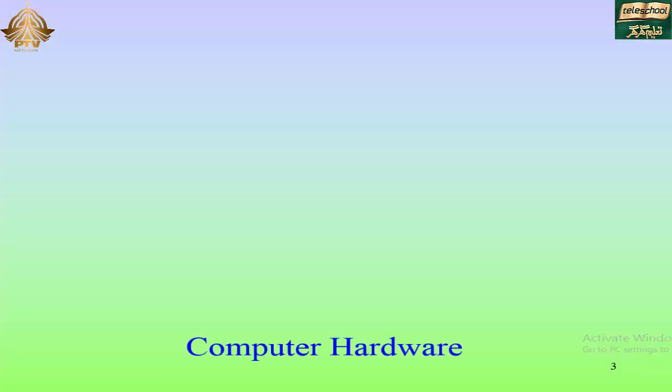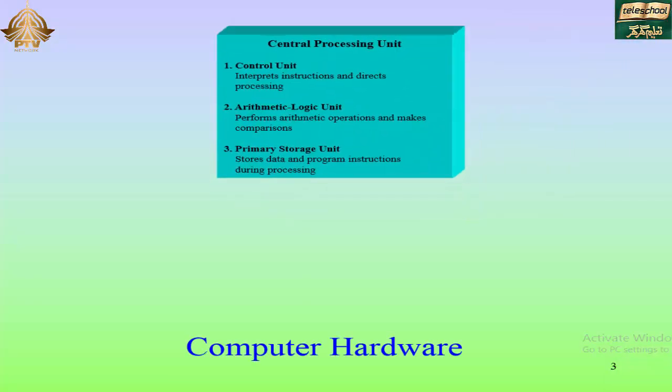Computer hardware. The central processing unit is the basic and main unit of the computer, which consists of three units: the control unit, the arithmetic logic unit, and the primary storage unit.